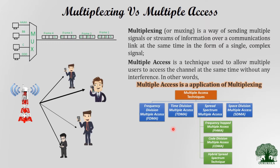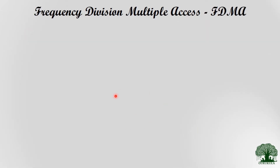In subsequent videos we will cover TDMA and CDMA. Now, with the basic knowledge of multiplexing and multiple access, we get into FDMA. Multiple access enables multiple users to access the channel between the base station and the mobile station. The key question is: how do we differentiate multiple users? There must be a principle that defines this differentiation.